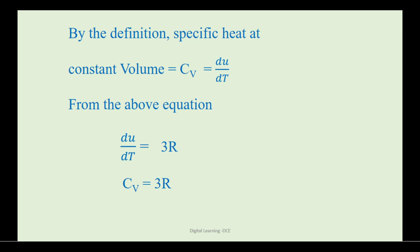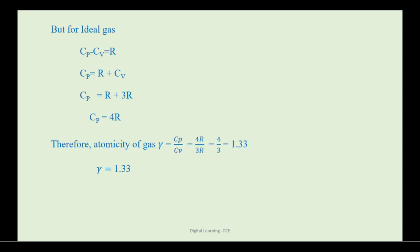By using Mayer's equation, we can calculate the value of Cp. The Mayer's equation is Cp minus Cv is equal to R. Then Cp is equal to R plus Cv. By substituting the value of Cv, that is 3R, we get Cp is equal to 4R.